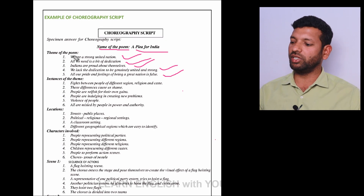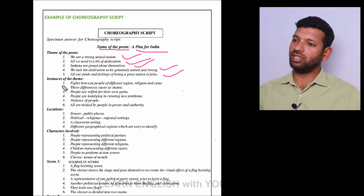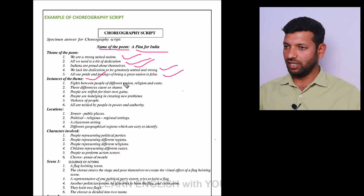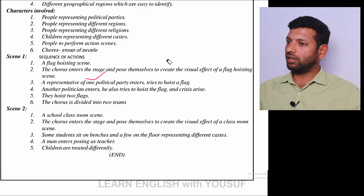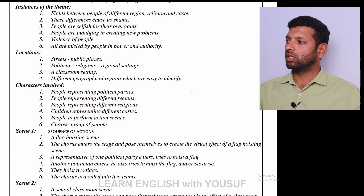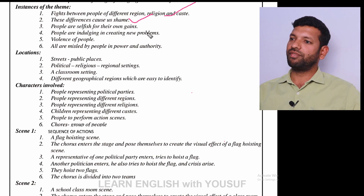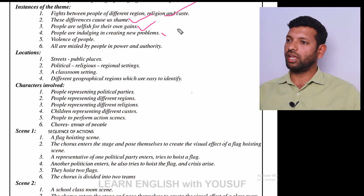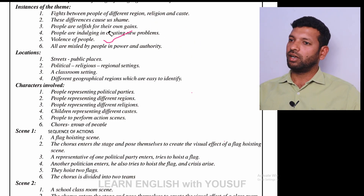If you take the poem 'Another Woman,' the themes could be: domestic violence, women have no rights, and women have no economical freedom. Instances of the theme for 'Plea for India': fights between people of different religions, this causes shame, people are selfish for their own gains, people are indulging in creating new problems, and people are misled by people in power and authority.